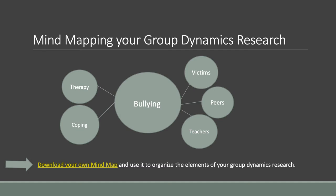You probably have a topic in mind at this point, either drawn from themes in your course readings and discussion or your own interest related to those themes. On the screen, you can see a simple mind map. I'm thinking about the group dynamics among victims and peers in a school setting and what types of interventions may be effective. I have bullying at the center of my organization and some of the group members on the right. The interventions I think might be useful are on the left. By getting my ideas on paper and organized into themes and relationships to the main research topic, I can begin looking for a set of articles that will help me investigate this issue. There's a mind map you can download and use for your own topic, and it's also available in the workshop guide.